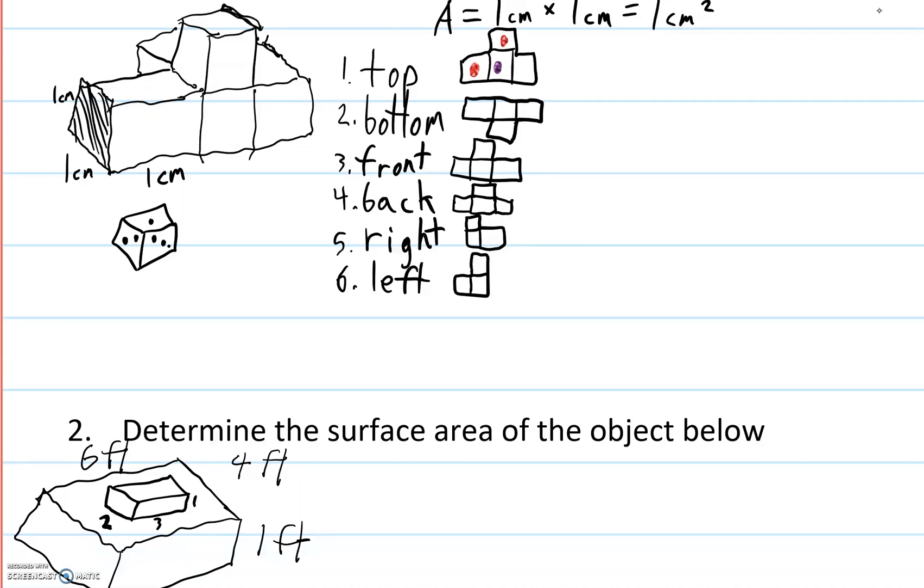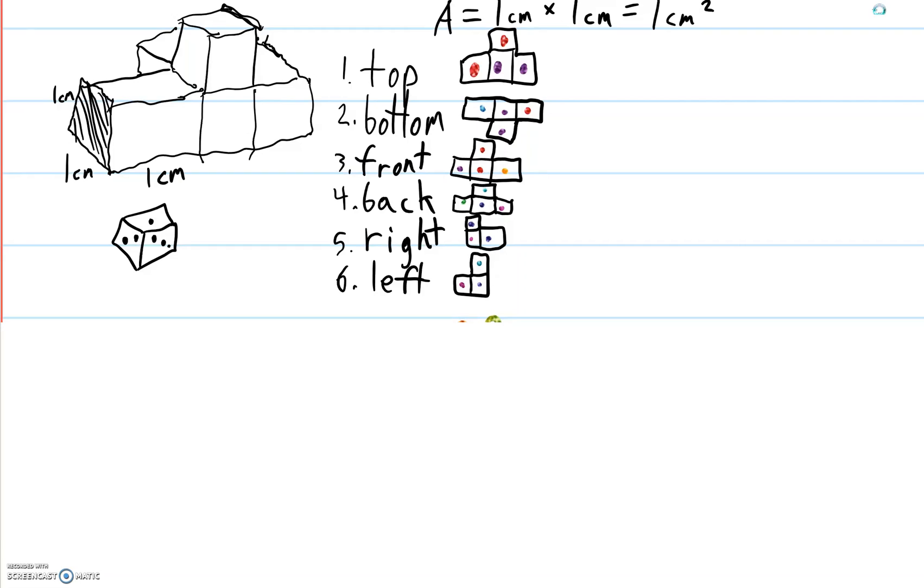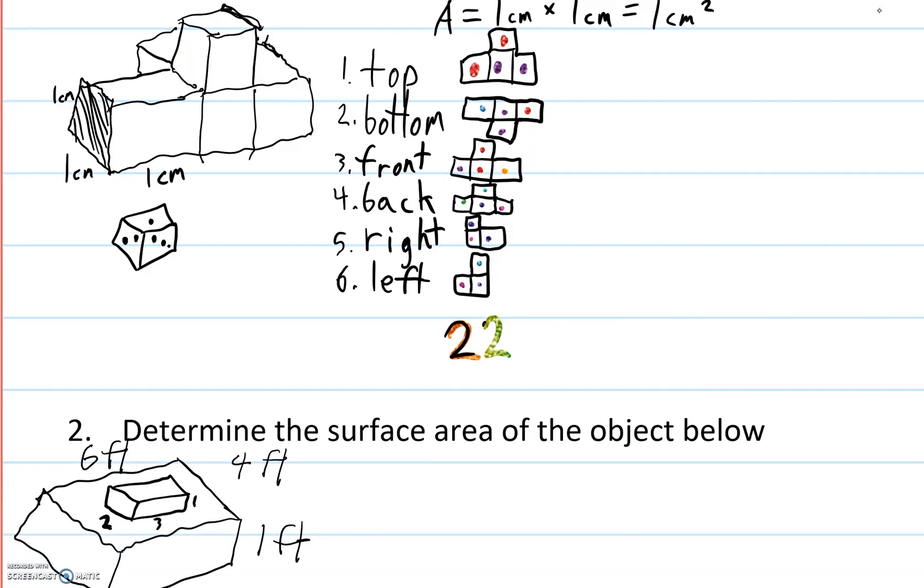So 1, 2, 3, 4, 5, 6, 7, 8, 9, 10, 11, 12, 13, 14, 15, 16, 17, 18, 19, 20, and 22. So we have 22, that's just from counting it up.